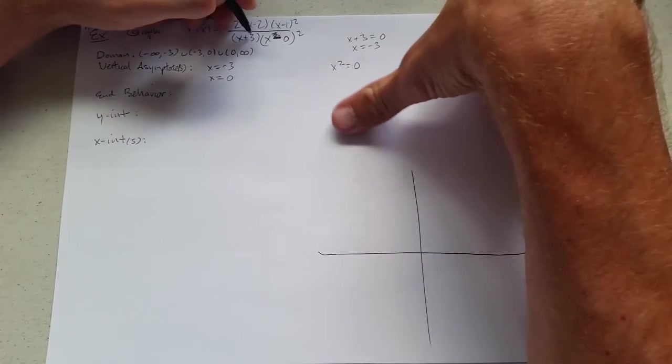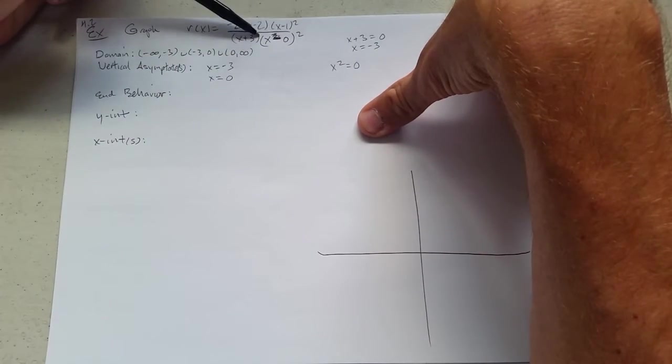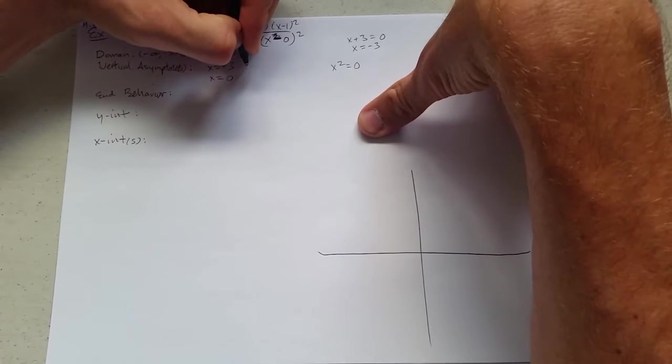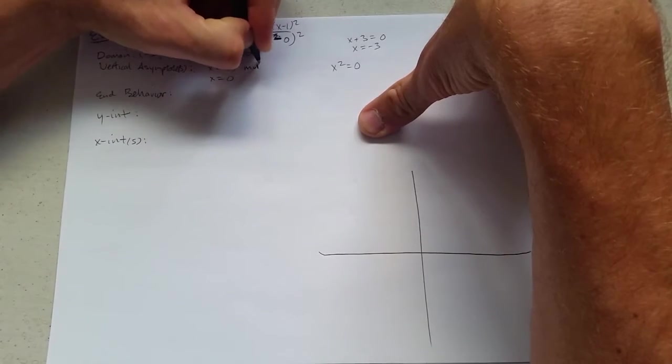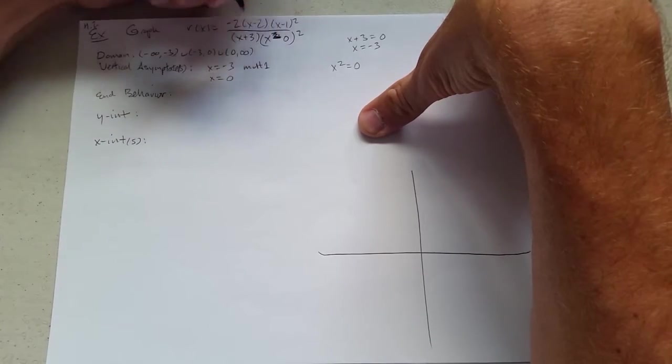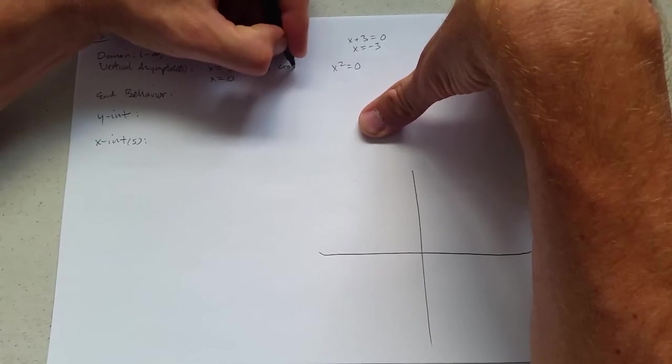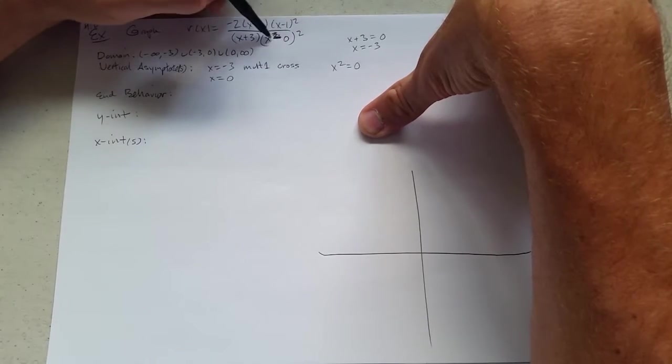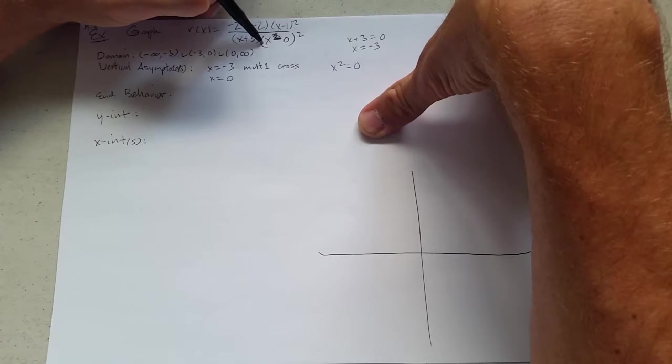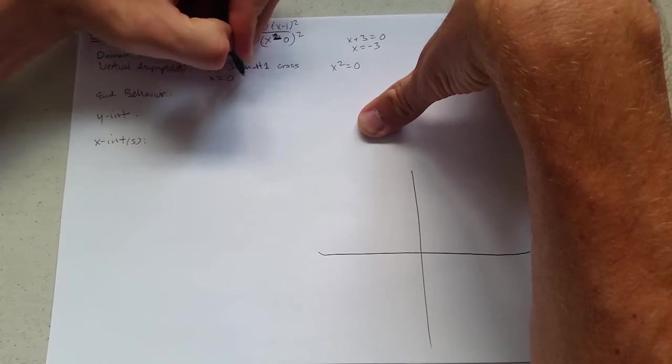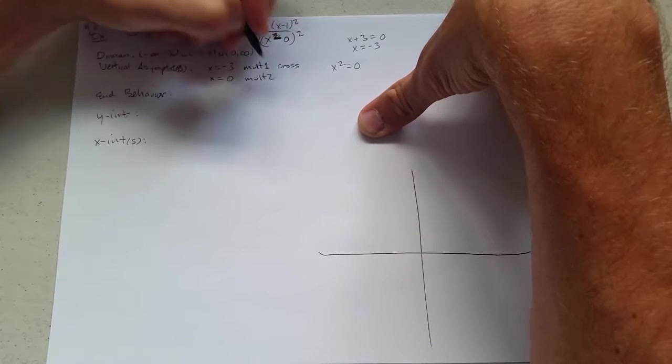Negative 3, what is multiplicity? You can see that there's no exponent here, so the multiplicity is 1. The multiplicity is 1, which is odd, so this is a cross. x equals 0, x equals 0. What is the multiplicity of x equals 0? It's 2. And 2 is bounce.